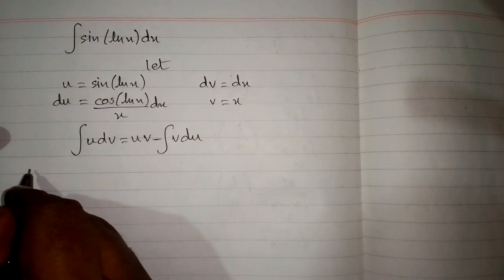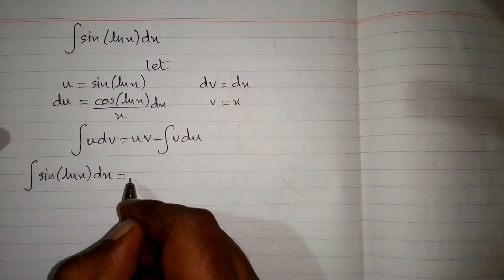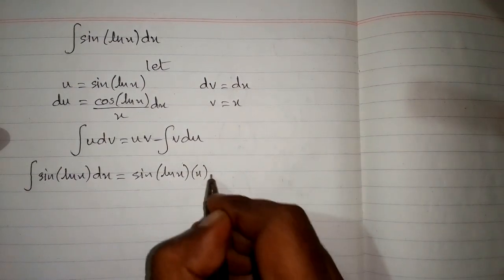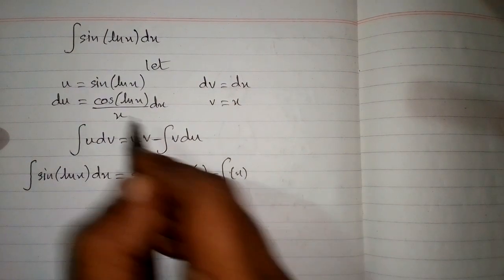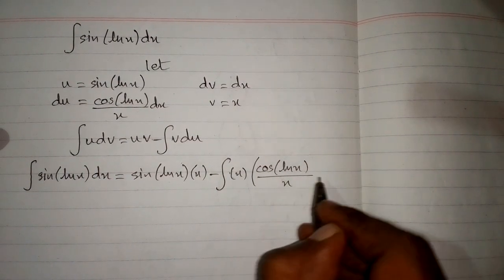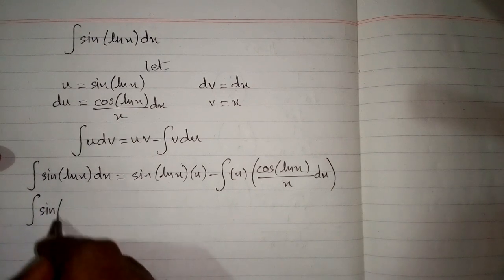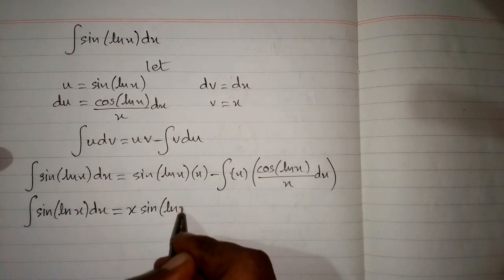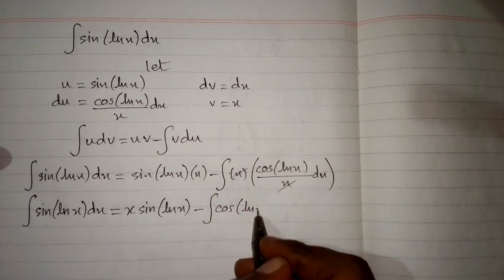Applying the formula, we put u equal to sin of ln x, v equal to x, and du equal to cosine of ln of x upon x dx. So the integral of sin of ln of x equals x times sin of ln of x, minus the integral of cosine of ln of x dx, after canceling the x terms.